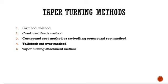The different methods for taper turning are: the form tool method, combined feeds method, compound rest method (or swivelling compound rest method), tailstock offset method, and taper turning attachment method. The compound rest method and the tailstock offset method are the most important and most commonly used.